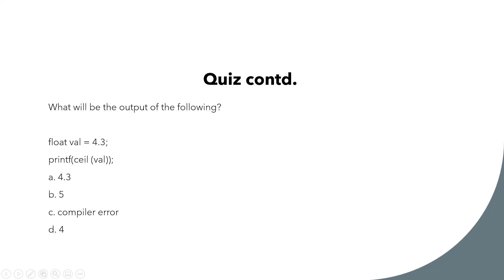Next: what will be the output of the following? Val equals 4.3, printf ceil of val. Will it print 4.35, give a compiler error, or print 4? In this case it gives a compiler error — again there's no format modifier present.